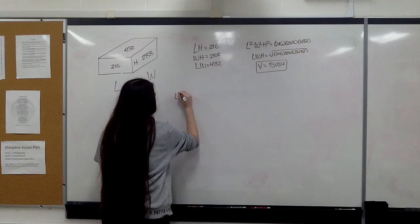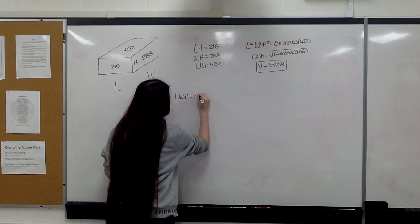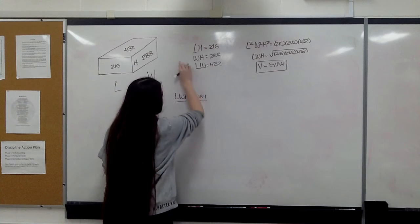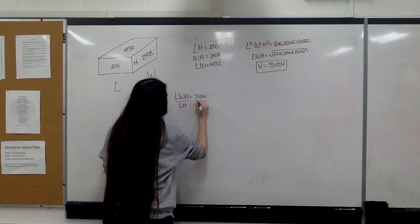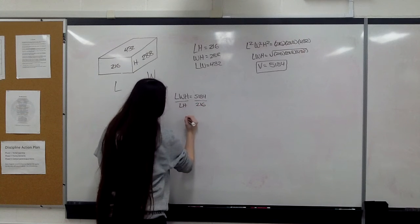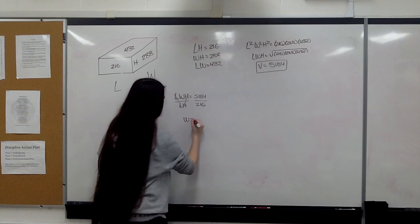You have volume, or length times width times height, equals 5184. Divide it by length times height first. If you cross it out, this gives you a width of 24.